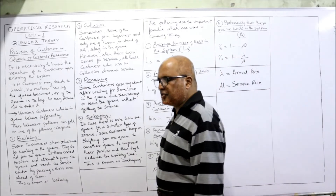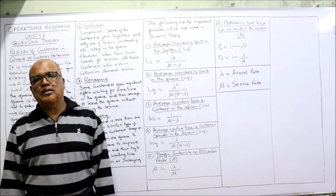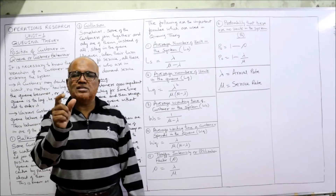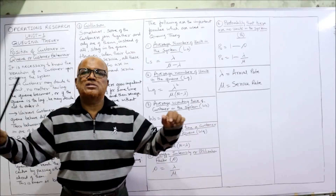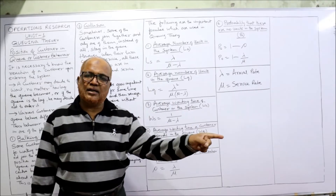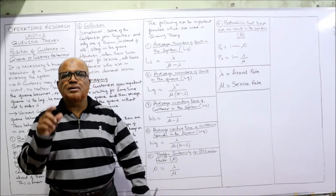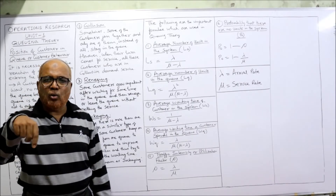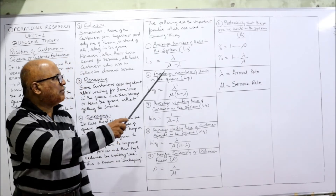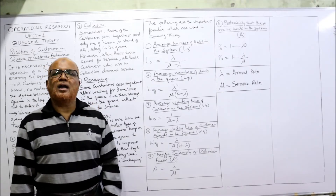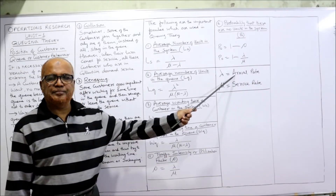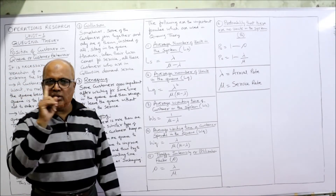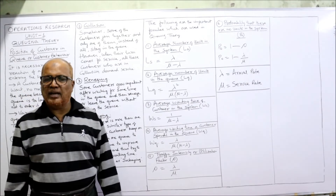The last topic of the theoretical part is the formulae used in queuing theory. The first formula: average number of units in the system, denoted as LS — meaning the average number of customers in the whole system, both those waiting in the queue and those getting service. The formula for LS is Lambda divided by (Mu minus Lambda), where Lambda is the arrival rate and Mu is the service rate.